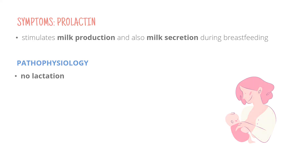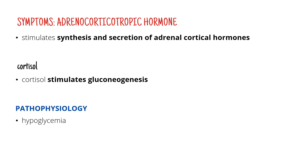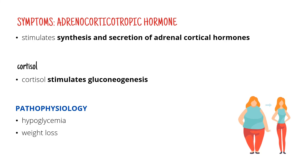The adrenocorticotropic hormone is responsible for stimulating the synthesis and secretion of adrenal cortical hormones, most importantly cortisol, which is a glucocorticoid that stimulates gluconeogenesis — the synthesis of glucose. So obviously we're going to end up with hypoglycemia, low blood glucose, and possibly even weight loss, because the extra glucose would normally get converted into fat. Without cortisol and the extra glucose, there won't be any. Of course this is a simplification, but it helps to understand the connection.